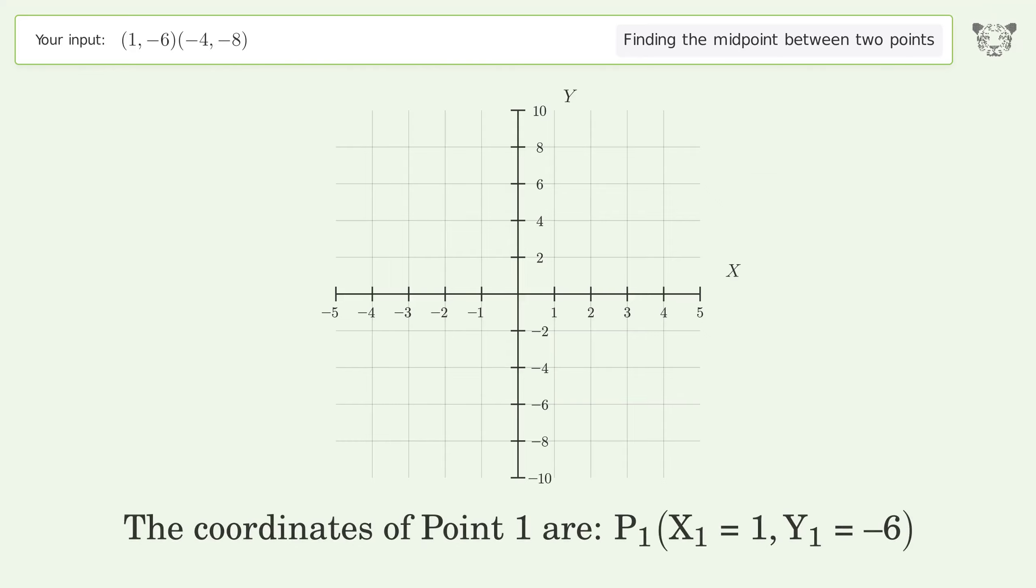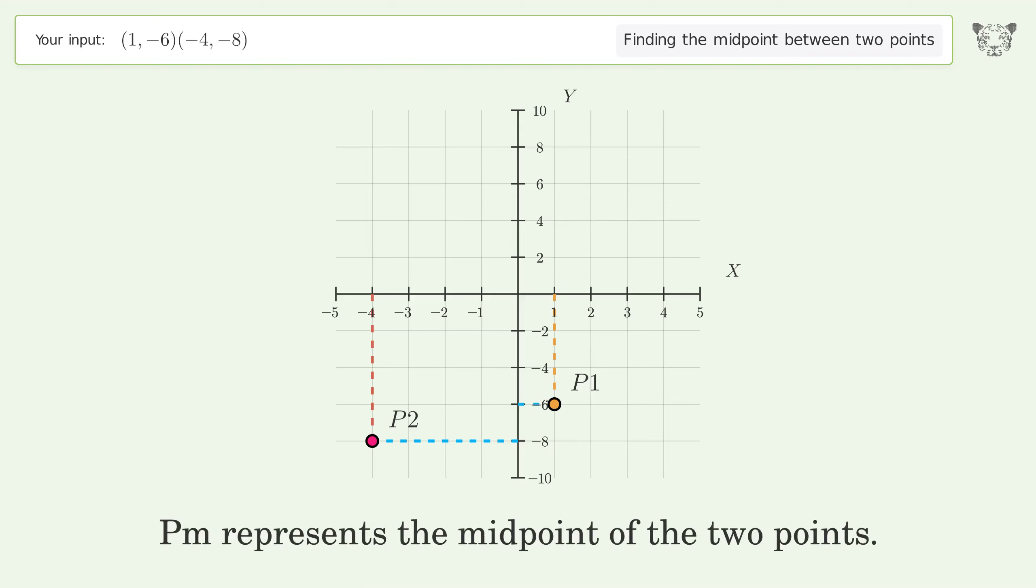The coordinates of Point 1 are x1 = 1, y1 = -6. The coordinates of Point 2 are x2 = -4, y2 = -8. Pm represents the midpoint of the two points.